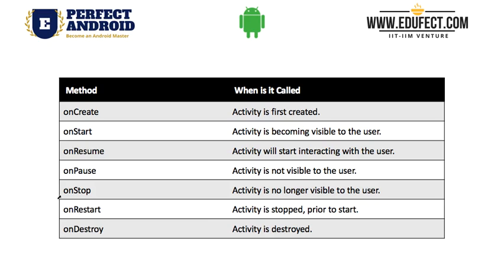From a stopped activity, when the activity is coming up and becoming visible to the user, that is when we get onRestart — that is, we are restarting the activity. And finally, onDestroy is when the activity gets destroyed, which means that after onDestroy the activity is no longer there.